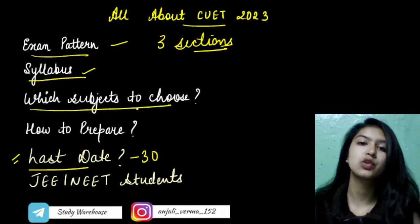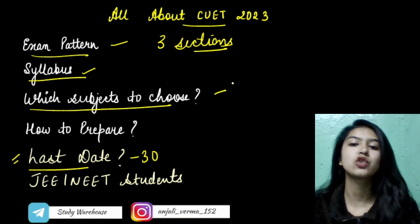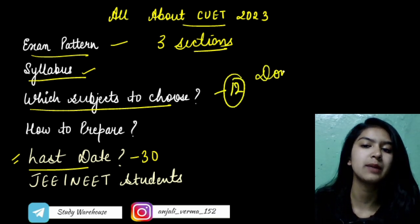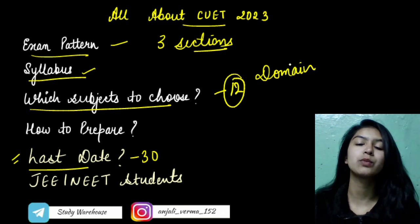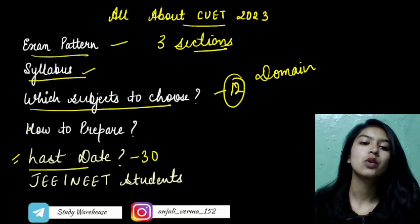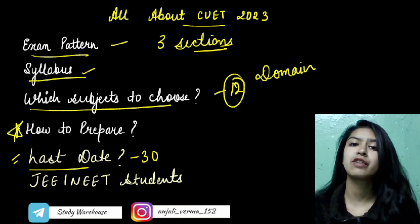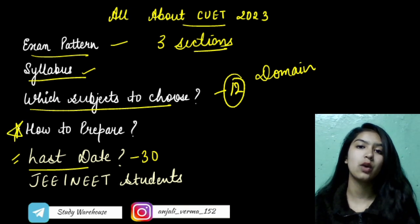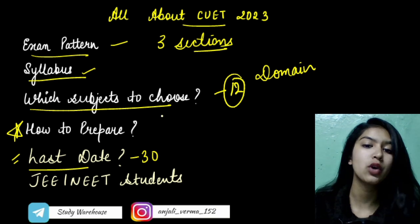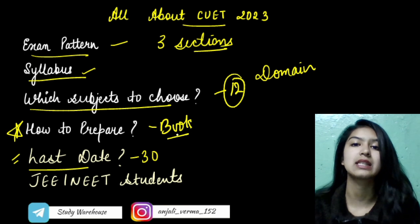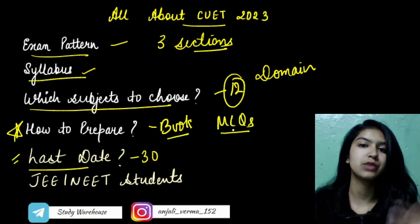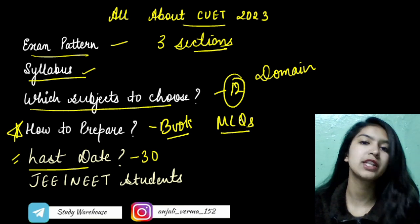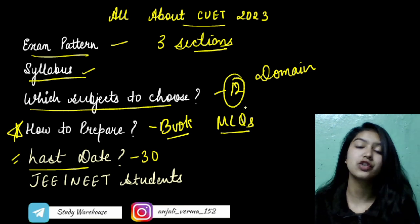Which subjects do you have to choose? As I already told you, it's your class 12 subjects. In the domain, there are subjects you have already studied, so you need to prepare those. I have added detailed strategy videos for that. For preparation, having a book is really important — because now we have an MCQ pattern instead of subjective questions, so the right book is essential to prepare.